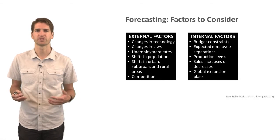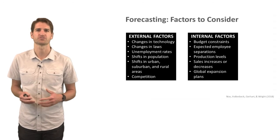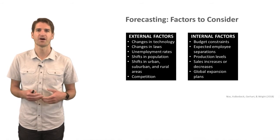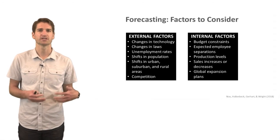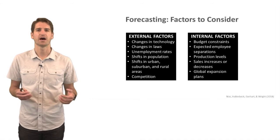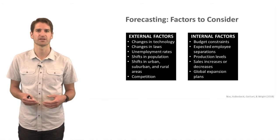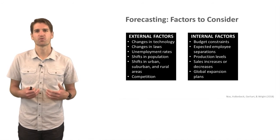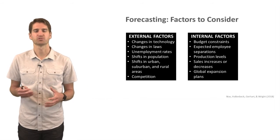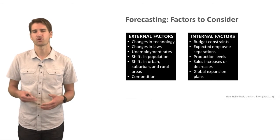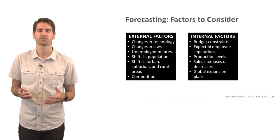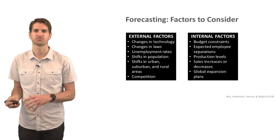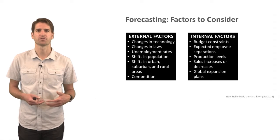When it comes to forecasting, there are different external and internal factors to consider. Externally, we can look at changes in technology, changes in laws, unemployment rates, shifts in the population, shifts in urban, suburban, and rural areas in terms of where people are living, and the types of KSOs or talent available in those areas, as well as competition from other organizations. Internally, we can look at budget constraints, expected employee separations such as retirement, monitoring average employee age, internal production levels, sales increases or decreases, and any expansion plans domestically or globally.